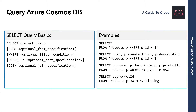Although Azure Cosmos DB is described as a NoSQL database management system, the SQL API enables you to run SQL-like queries against Cosmos DB databases. These queries use a syntax similar to that of SQL, but there are some differences. This is because the data in a Cosmos DB is structured as documents rather than tables.